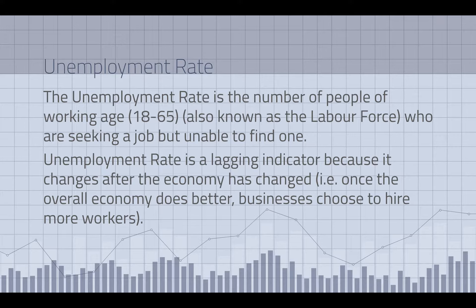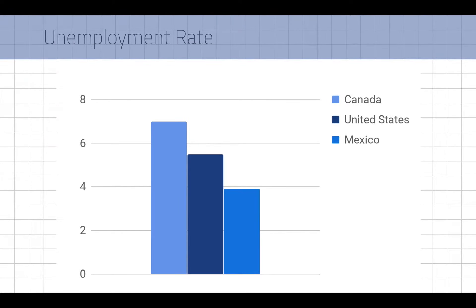If a business is doing well, they'll hire someone; if not, they'll lay someone off. But it's not an instantaneous or concurrent indicator. Looking at pre-COVID-19 data, in 2018 Canada had a little more unemployment than the US. And Mexico, out of the three countries in the US-Mexico-Canada Agreement, actually had the lowest unemployment rate.